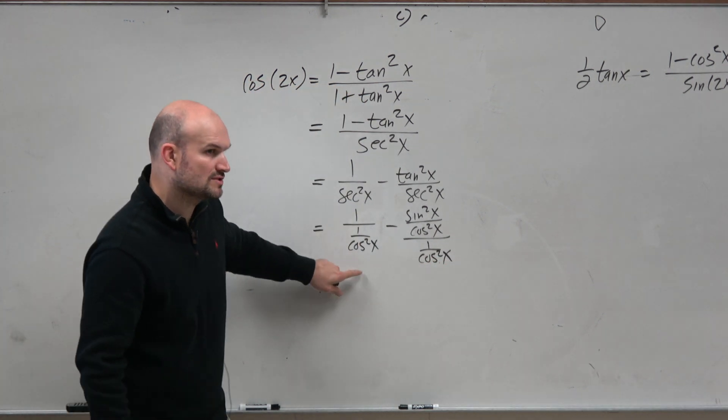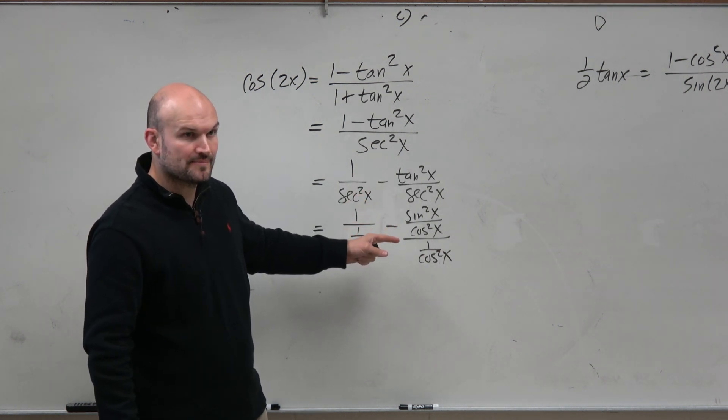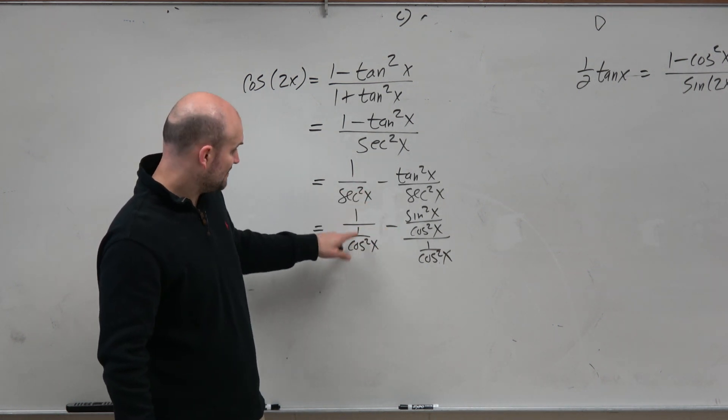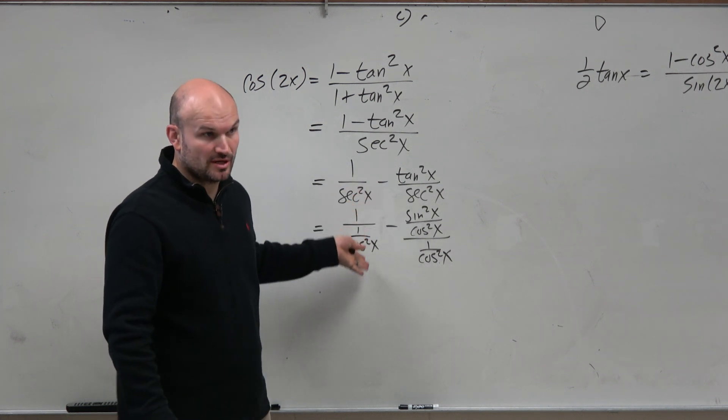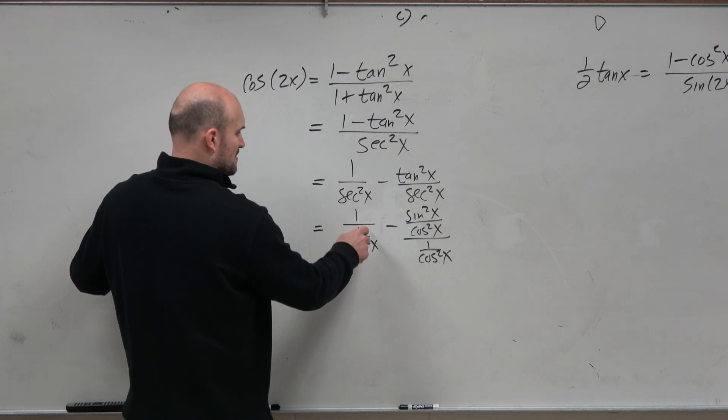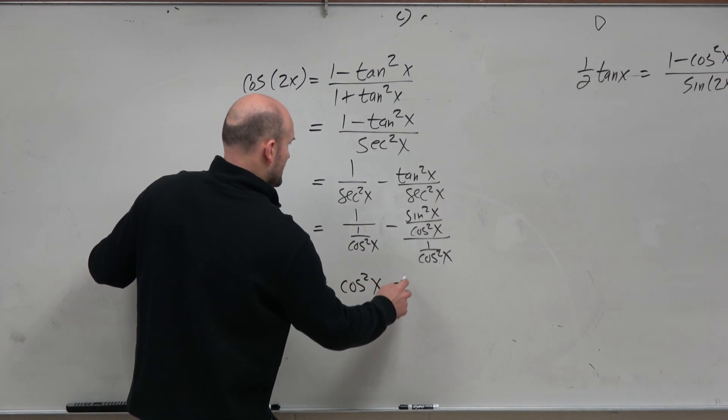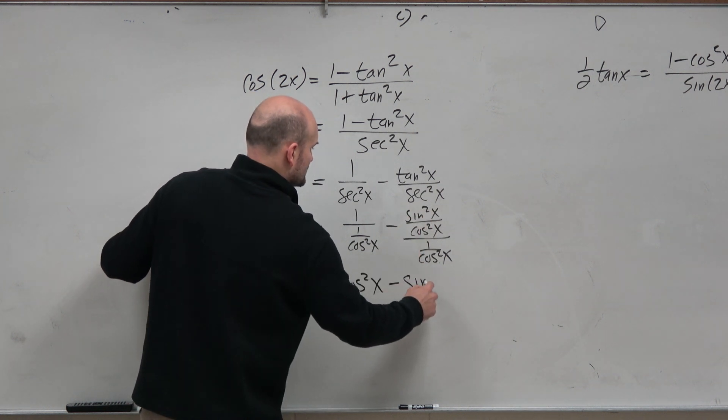Now, again, if you're dividing by 1 over cosine, to get that to be 1, you could just multiply by cosine on the top and bottom, right? So if you flip that, dividing by 1 over cosine, the same thing is just multiplying by cosine. So if I really multiply by cosine on the top and bottom, I would get a cosine squared of x minus a sine squared of x.